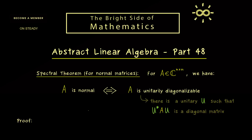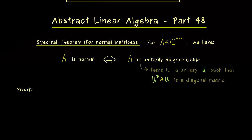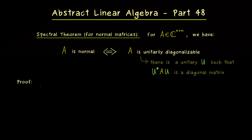As already mentioned in the last video, this is the best case we can have in the Schur normal form, and in fact this Schur decomposition we will use in the proof of the Spectral Theorem.